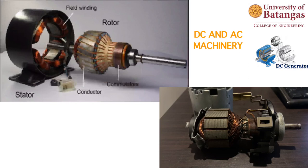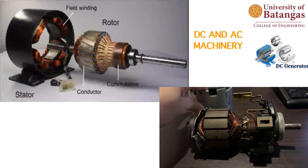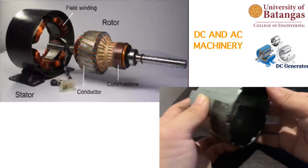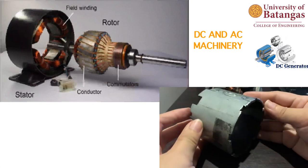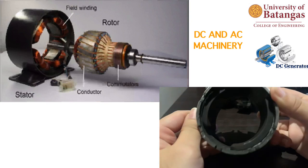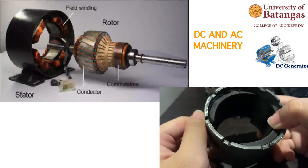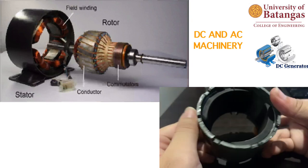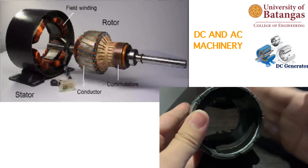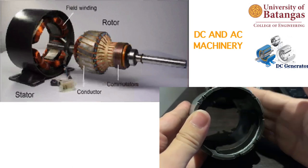The parts of a DC generator may be divided into two: a stationary part known as the stator, and a rotating part known as the rotor. The stator includes the field windings and the yoke. The brushes are also part of the stator.